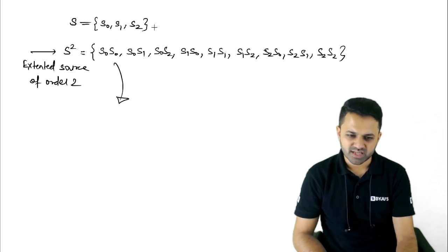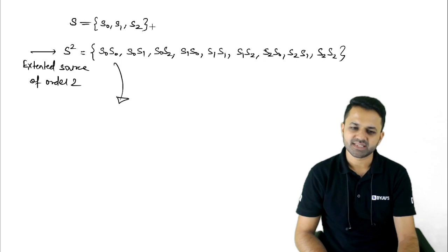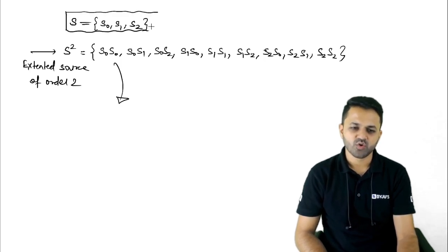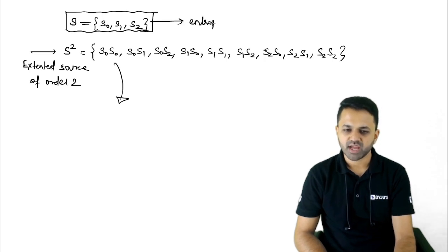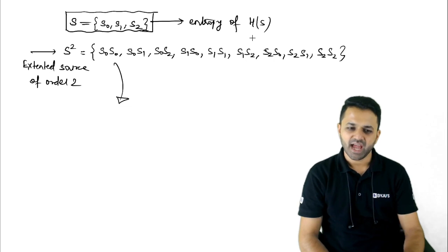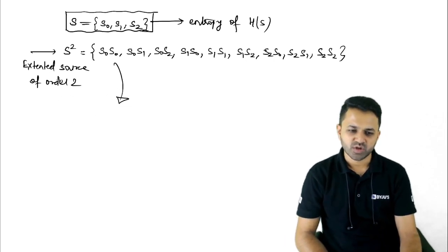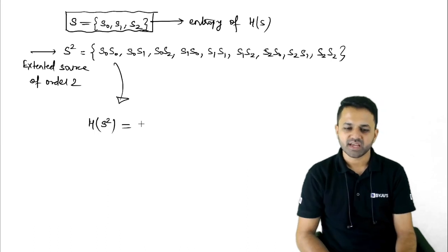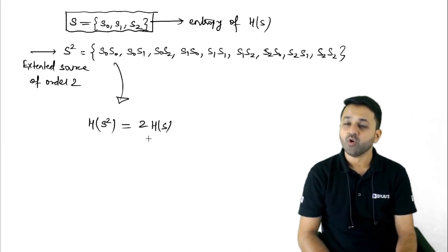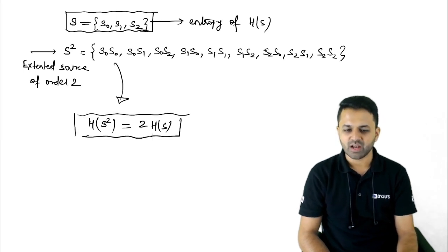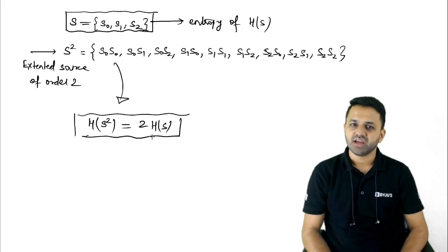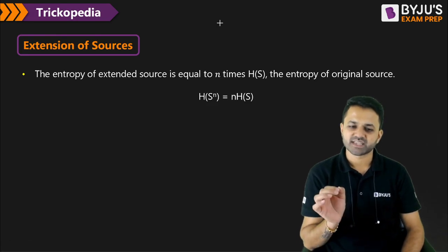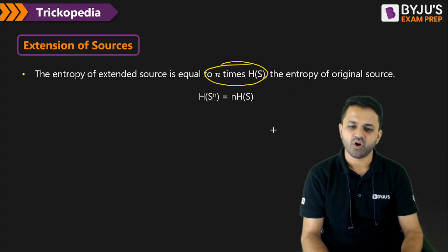Now, how do you calculate the entropy of this extended source? Because this extended source is made up from the original source S, you can calculate the entropy of the original source H(S), and then multiply it with the order of the extended source. Here the extended source has order 2, so the entropy of S^2 equals 2 * H(S) — the extended source entropy is simply twice the entropy of the original source. This is how you calculate the entropy of any nth-order extension.